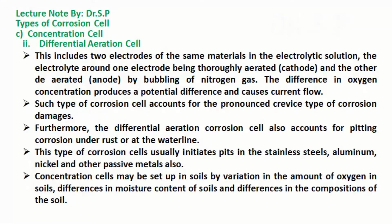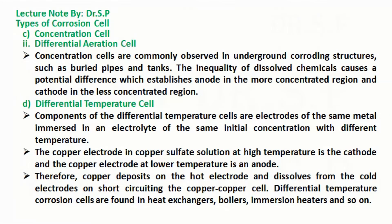Furthermore, the differential aeration corrosion cell also accounts for pitting corrosion under rust or at the water line. This type of corrosion cell usually initiates pits in stainless steels, aluminum, nickel, and other passive metals. Concentration cells may also be set up in soils by variation in the amount of oxygen, differences in moisture content, and differences in soil composition. Concentration cells are commonly observed in underground corroding structures such as buried pipes and tanks.